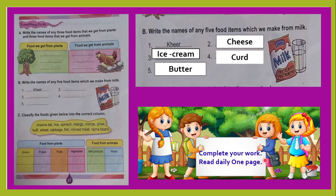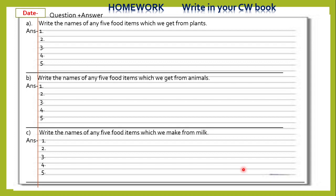Complete your work. Read daily one page. You need to do exercise A and B. What you can do: in your pages 25, 26, 27, then read daily one page. Now it is time to give you homework. This is your CW page. Write in CW book, question and answer, date. Write the names of any food items which we get from plants — 5 food items.